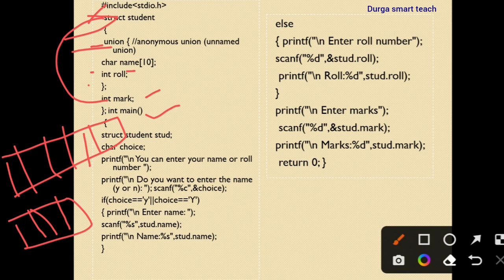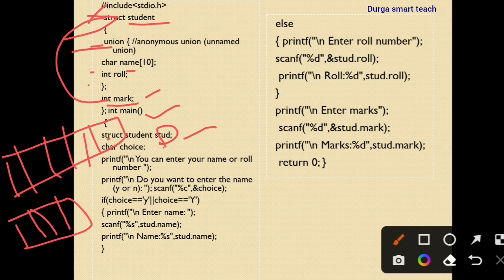In the main function, we declare a structure variable: struct student stud. Here struct is the keyword, student is the structure name, and stud is the structure variable name. Using this structure variable name you can access all members of the structure. We also declare a character variable called choice.